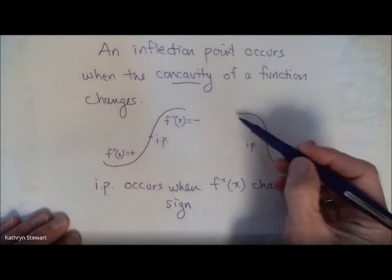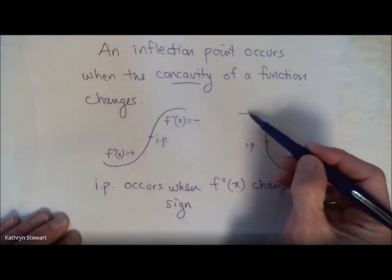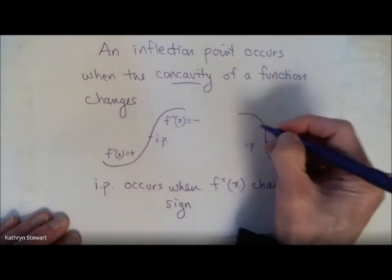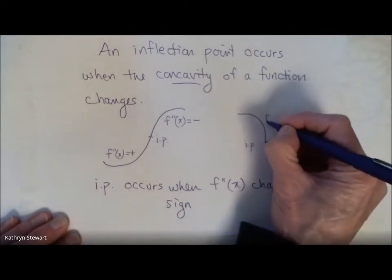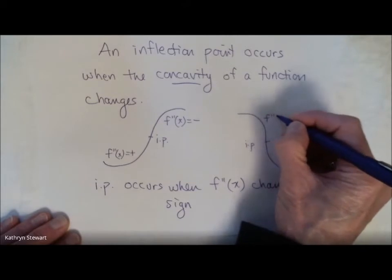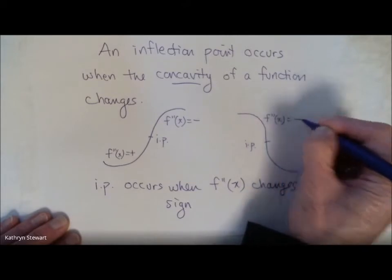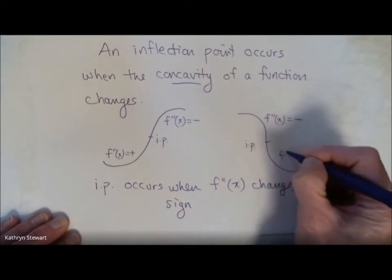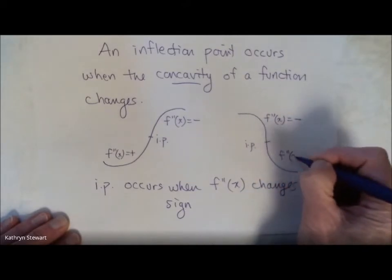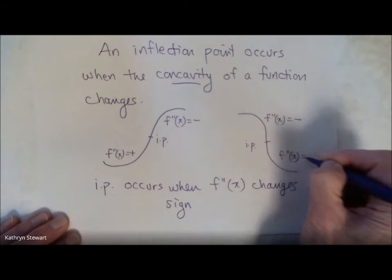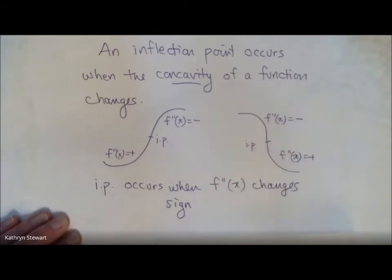The sign of the second derivative changes at that inflection point. Same thing in the other example — going from concave down to concave up, the second derivative went from negative to positive. So inflection points occur when the sign of the second derivative changes.